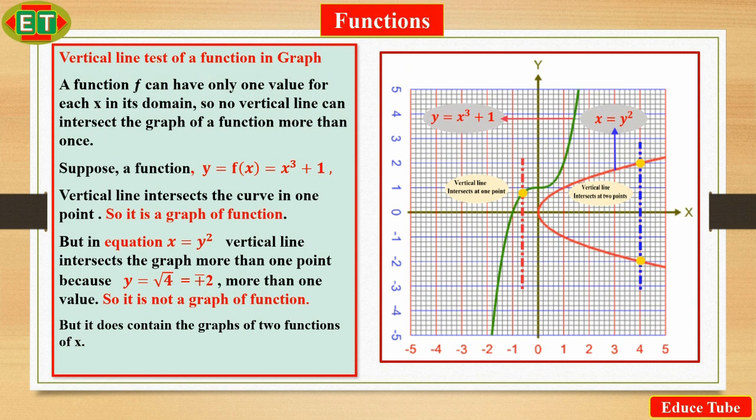Here I have a function y = x³ + 1. In the graph, we can see there is a red line, it is a red vertical line. It intersects the graph at one point. So it is a graph of function.